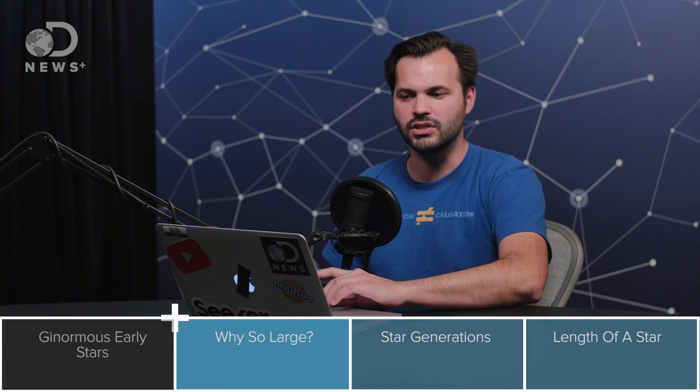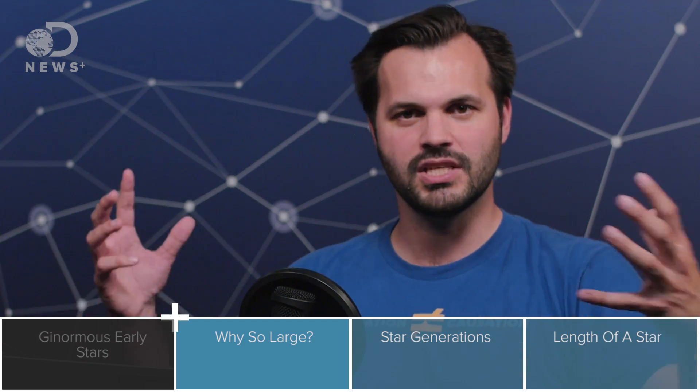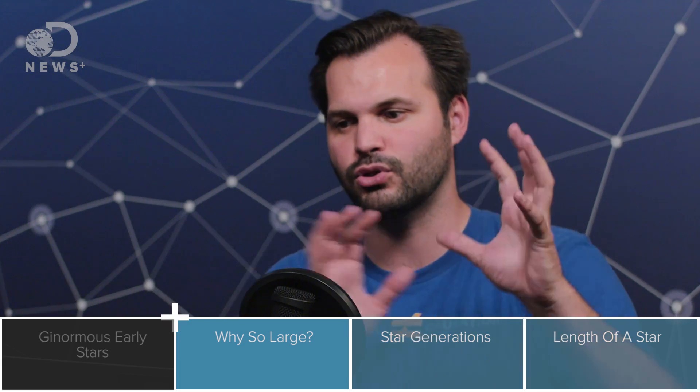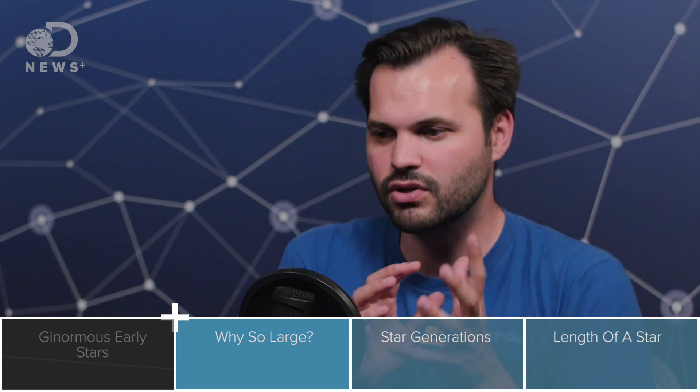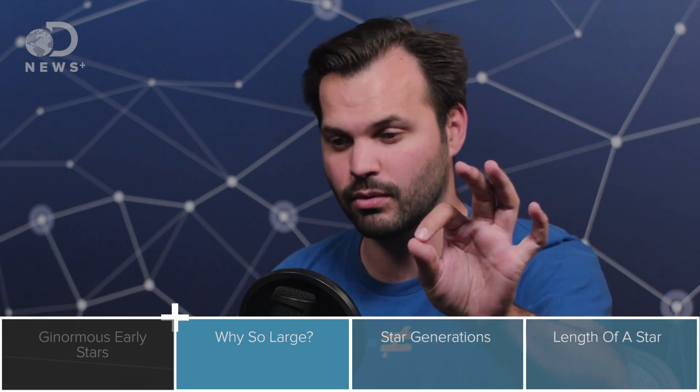The reasons we thought that these early stars were so big was because stars come from these collapsing clouds of helium and hydrogen. And there are trace amounts of heavier elements in the universe that contribute to these star formations. Remember that, because that's very important. Put a pin in that. Heavier elements, very important.